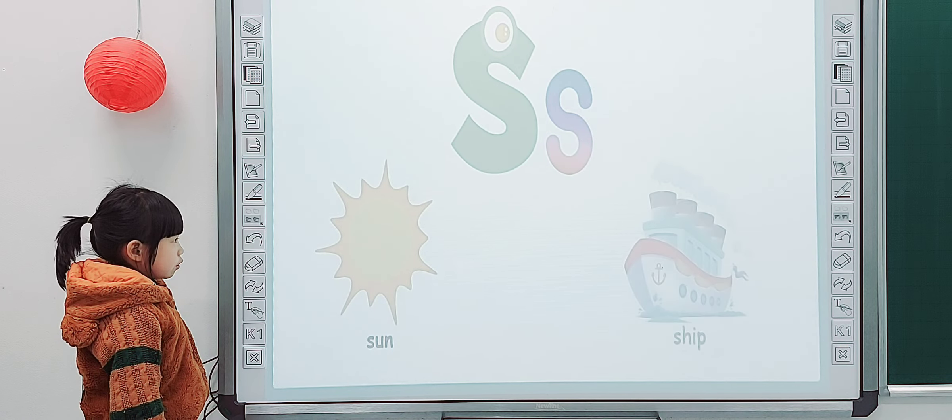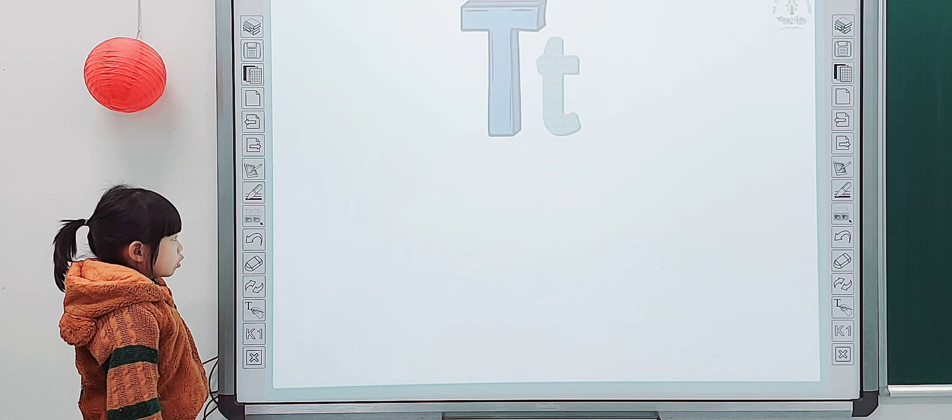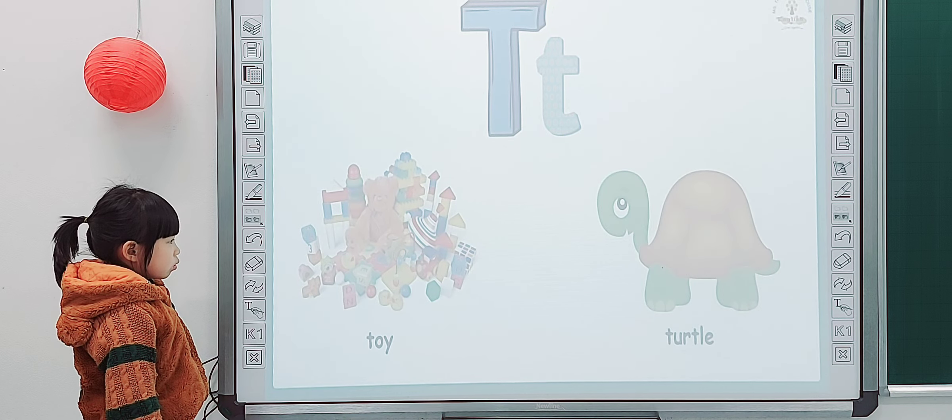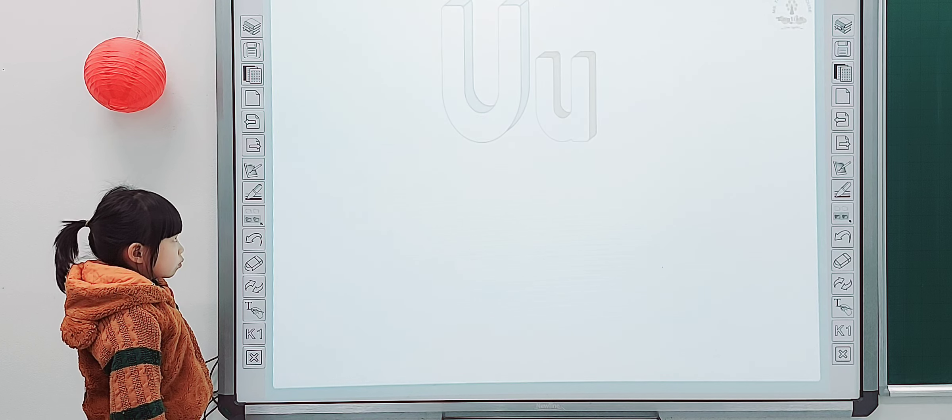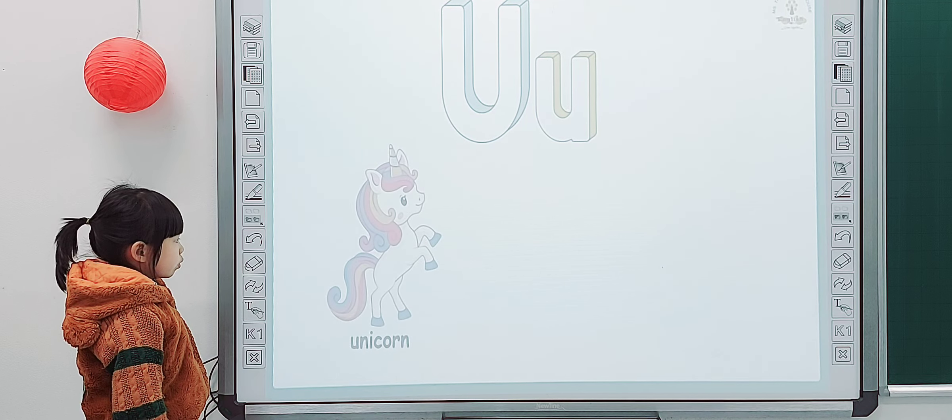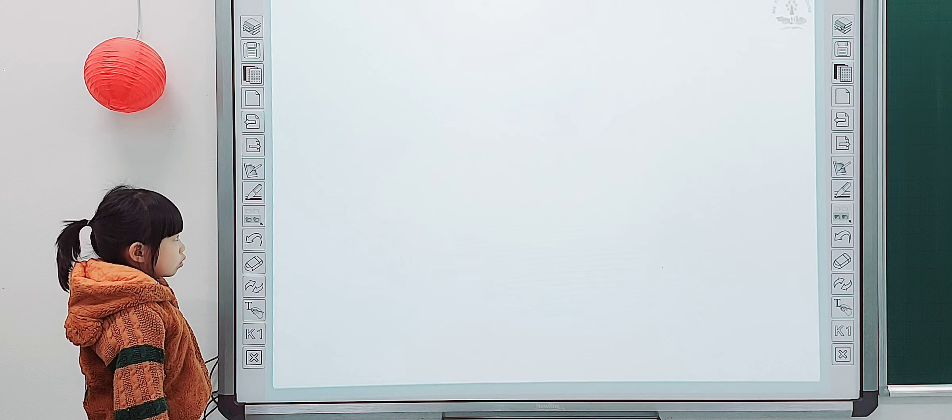S. Sun. Ship. Good. Next one. What is it? T. Turtle. Toy turtle. And next one. U. Umbrella.